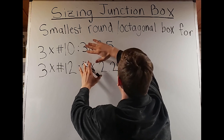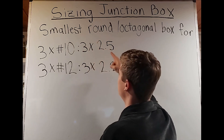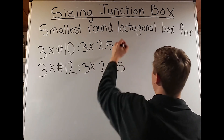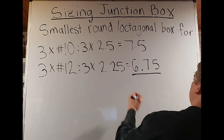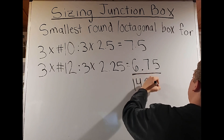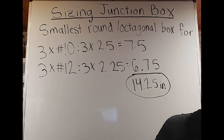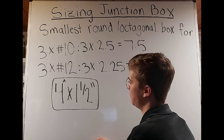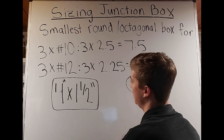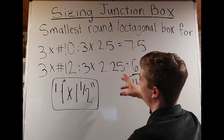The last question: what is the smallest round/octagonal box for three number-10 and three number-12 conductors? Number-10 is 2.5 cubic inches and number-12 is 2.25. Three times 2.5 equals 7.5; three times 2.25 equals 6.75. Adding: 7.5 plus 6.75 equals 14.25 cubic inches. Going to Table 314.16A under round/octagonal, we see 12.5 and then 15.5 cubic inches. The 15.5 is a four by one-and-a-half inch box — equivalently a four by four by one-and-a-half inch — and that is the smallest round/octagonal box for these conductors.